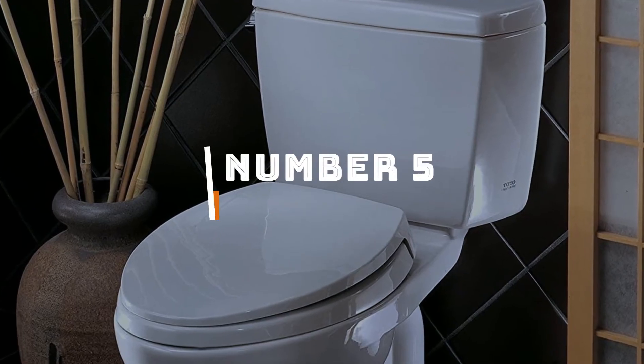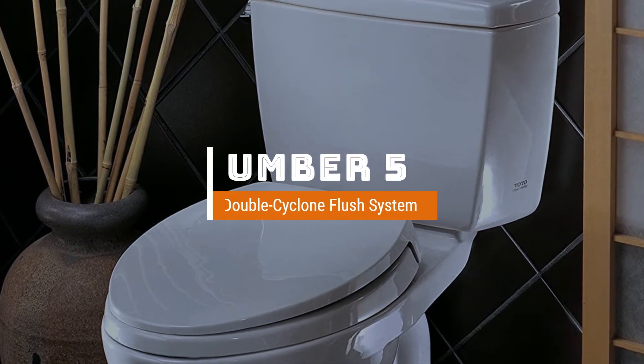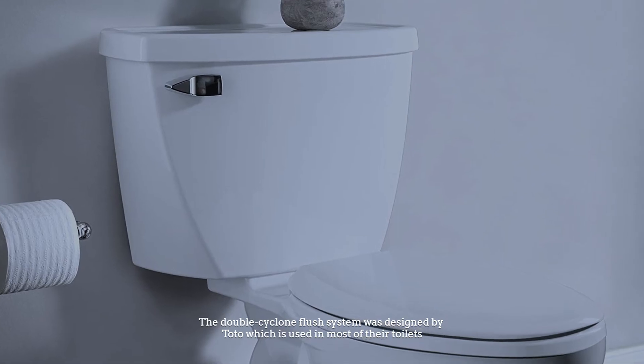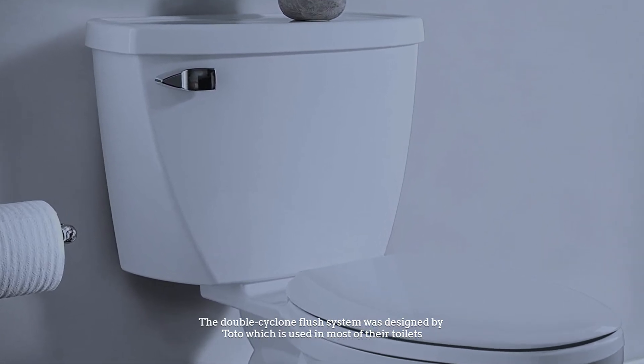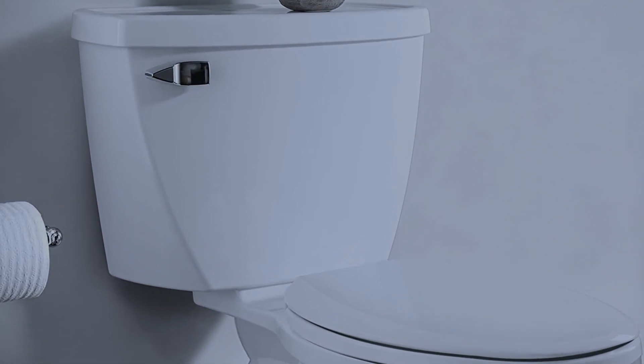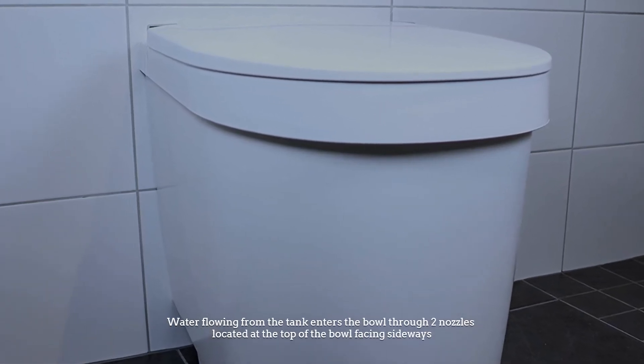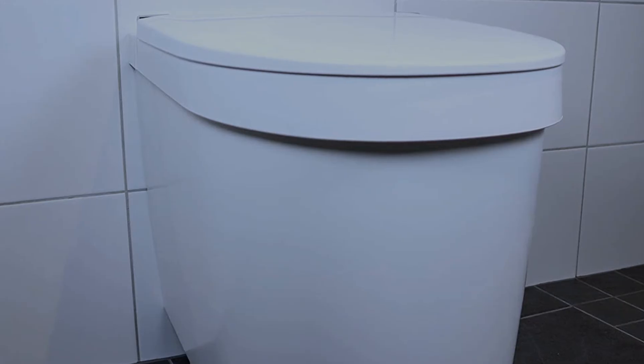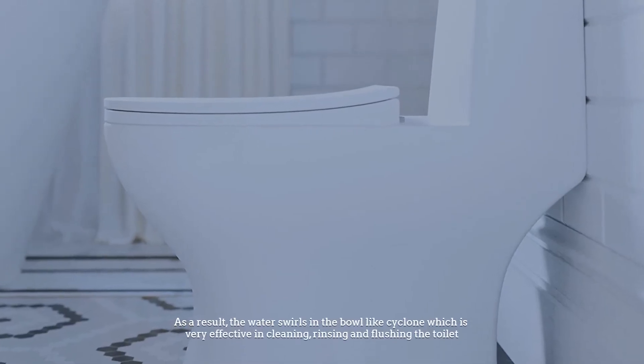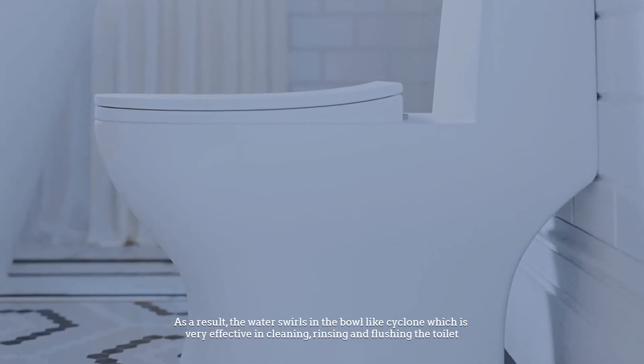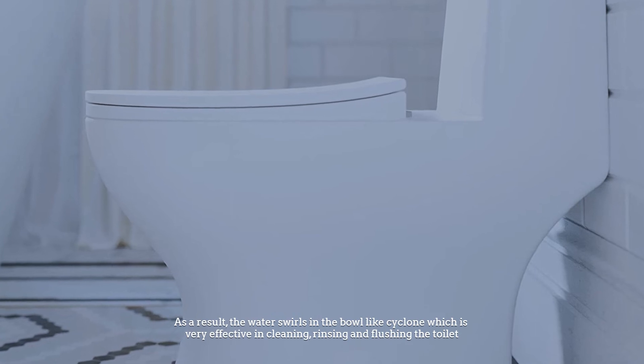Number 5: Double Cyclone Flush System. The double cyclone flush system was designed by Toto and is used in most of their toilets. Water flowing from the tank enters the bowl through two nozzles located at the top of the bowl facing sideways. As a result, the water swirls in the bowl like a cyclone, which is very effective in cleaning, rinsing, and flushing the toilet.